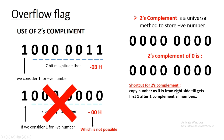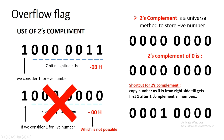How can we find the 2's complement of any number? There is a shortcut: copy the number as it is from the right side until we get the first 1, and after that first 1 we complement all the remaining bits. So starting from the right, copy all bits as they are until the first 1, then complement each and every bit after it. This gives us the 2's complement of the original number.